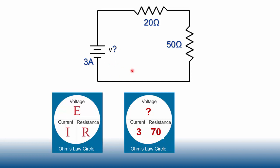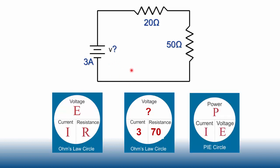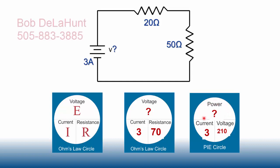We can also calculate power using the pie circle formula: power equals current times voltage. With a current of 3 amps and a voltage of 210 volts, 3 times 210 gives us 630 watts.